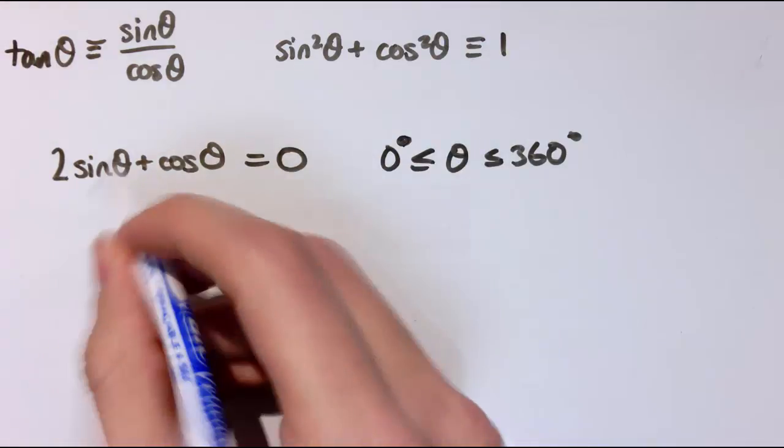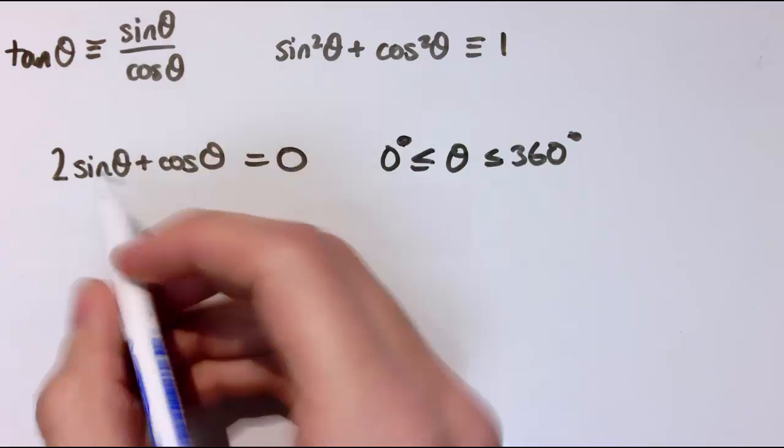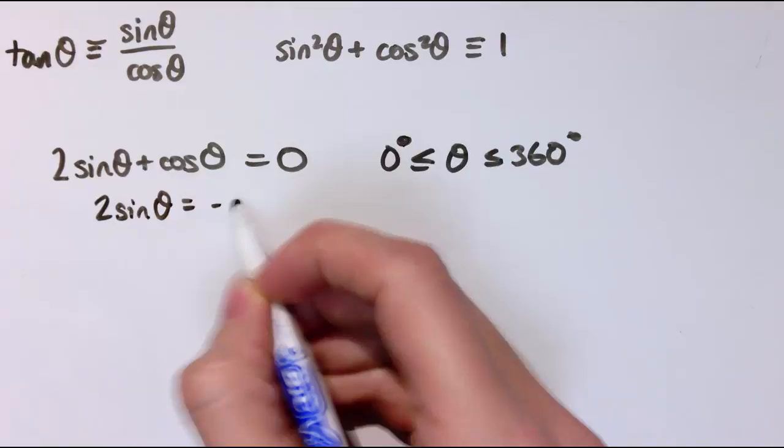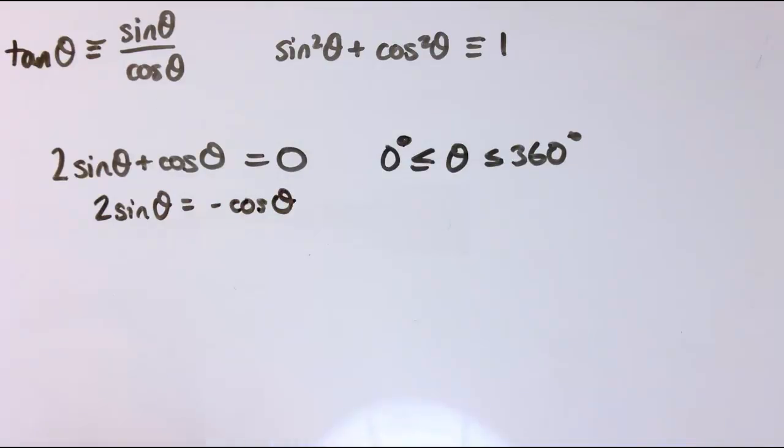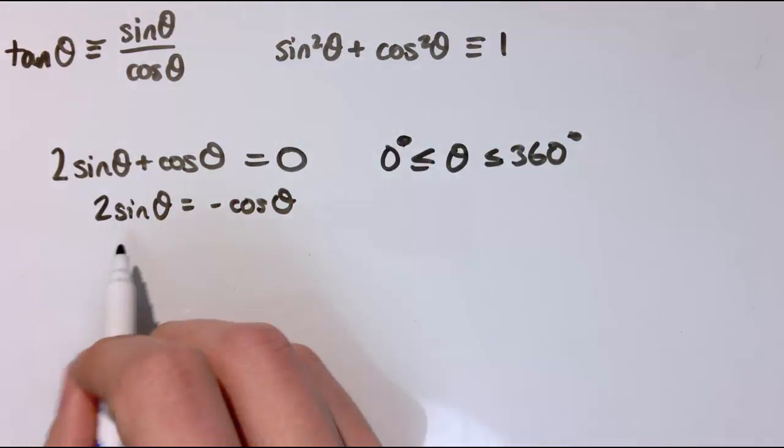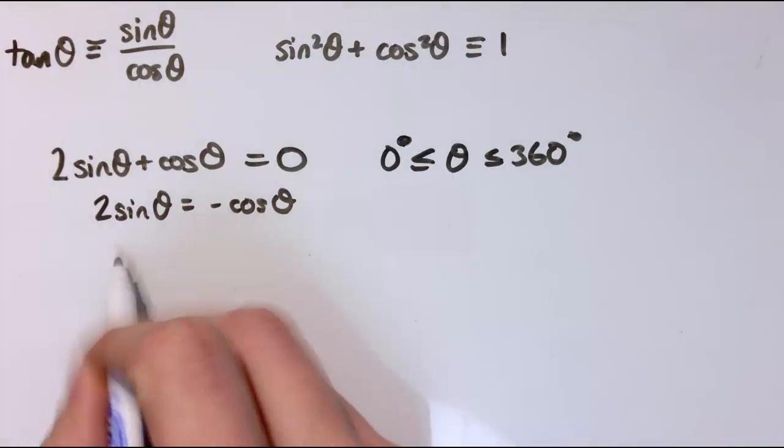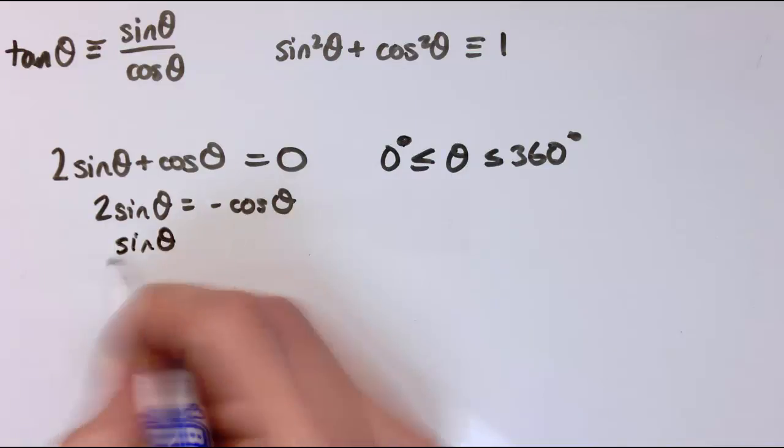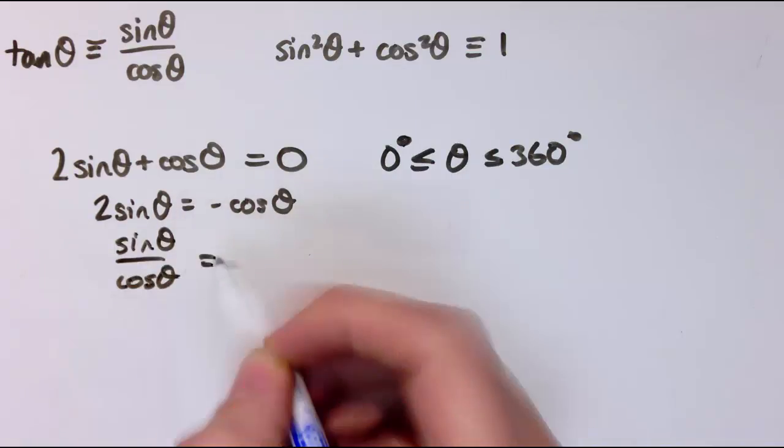So that I've got sin θ over cos θ in there somewhere. So 2 sin θ equals minus cos θ. And then I could say divide both sides by cos θ and by 2, and that would give me sin θ over cos θ is equal to minus 1 half.